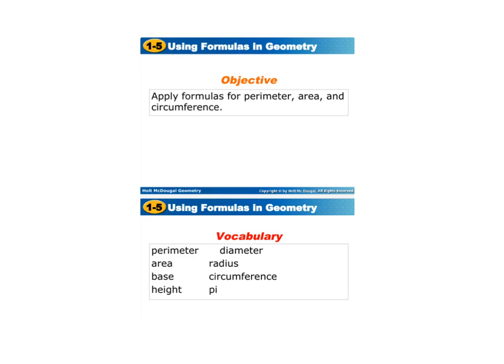Today we're going to be going over 5.1 using formulas in geometry. The objective in this lesson is to apply formulas for perimeter, area, and circumference. Some of the vocab words are perimeter, area, base, height, diameter, radius, circumference, and pi. We're going to go over all of these vocab words in this lesson.